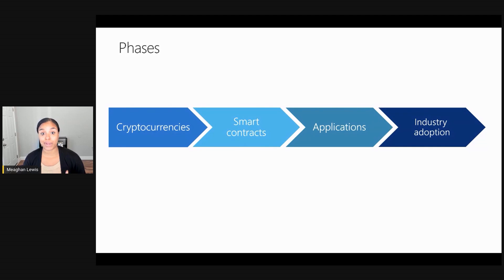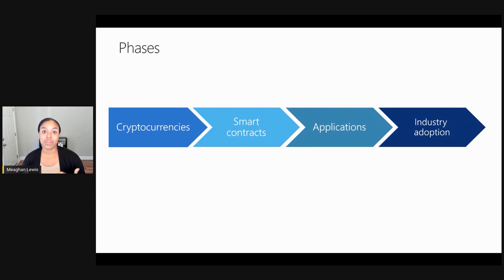Since the popularity of Bitcoin grew, we have seen a flux of cryptocurrencies emerge as a result. Blockchain 2.0 is about smart contracts. With cryptocurrencies like Ethereum, you can program agreements or contracts between parties. Blockchain 3.0 is the decentralized applications, or DApps for short. DApps are built around smart contracts and create an interactable interface.